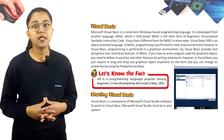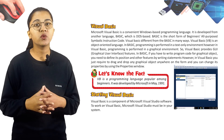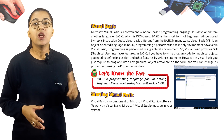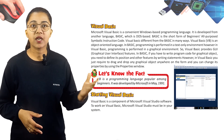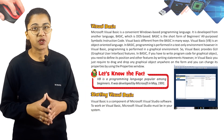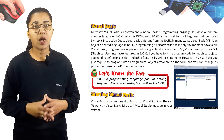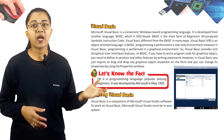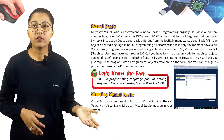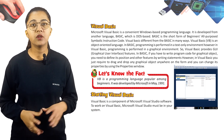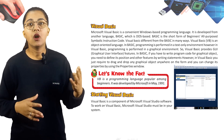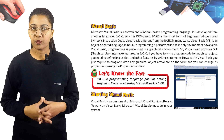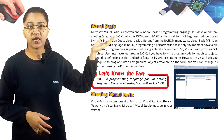Visual Basic, or VB, is different from BASIC in many ways. Programming in VB is performed in a graphical environment, providing a Graphical User Interface (GUI). In BASIC, if you have to write program code for a graphical object, you need to define its position and other features by writing statements. However, in Visual Basic you just require to drag and drop any graphical object anywhere on the form and change its properties using the properties window.